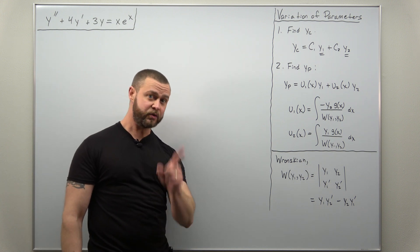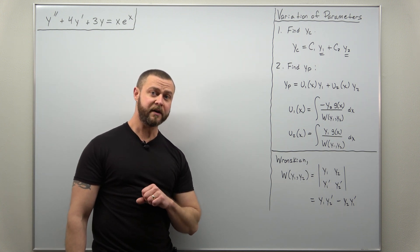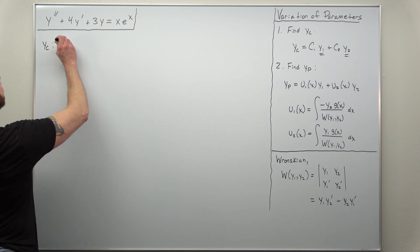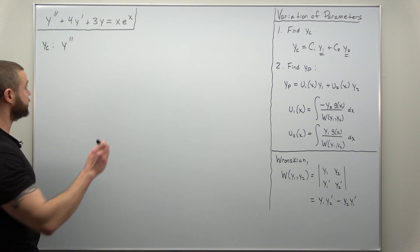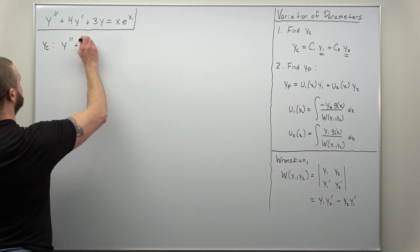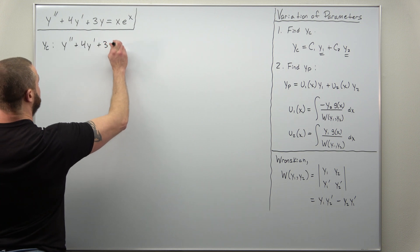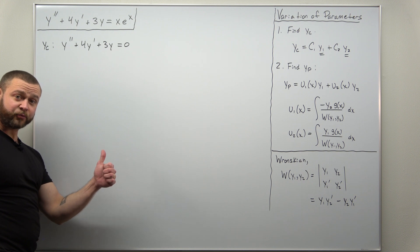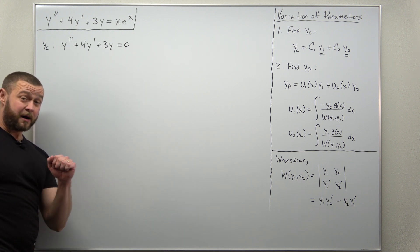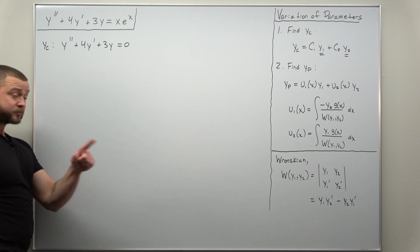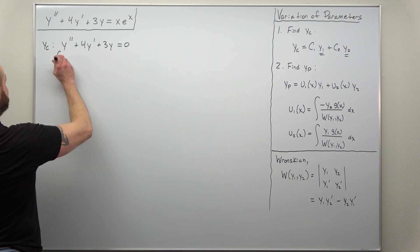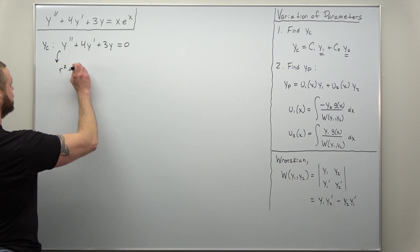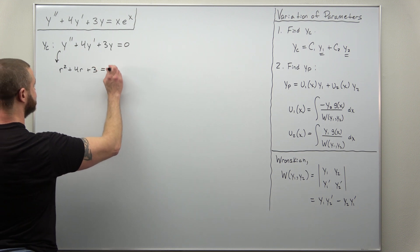Let's get to the first step: solving for the complementary solution. We're going to solve the homogeneous ODE where the right-hand side is zero. You only have three possibilities: distinct real roots, a repeated real root, or complex roots. All three come from the characteristic equation. Converting, you should get r squared plus 4r plus 3 equals 0.